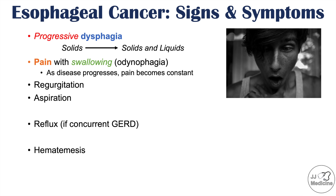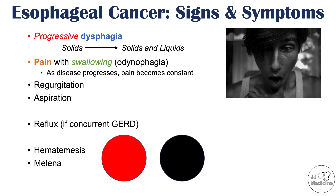Hematemesis — vomiting blood — can also occur. Bleeding from the esophagus can travel to the stomach, become digested, and appear in stool as a black, tarry, often smelly consistency called melena. Anemia can also result from chronic blood loss due to esophageal bleeding.